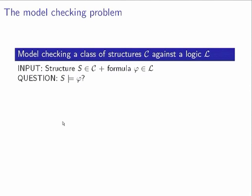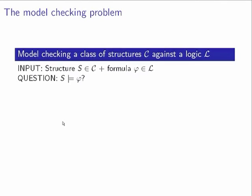This is basically the combined complexity of the model checking problem. One can also ask the question whether, for a fixed system — if you fix a system in advance and you're only given a formula — you would like to answer the model checking problem. This is the so-called expression complexity. And then you can do the same vice versa, where you fix the formula and have the structure as input: that is the data complexity of the model checking problem.